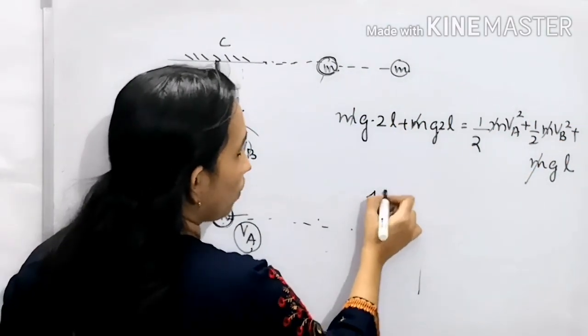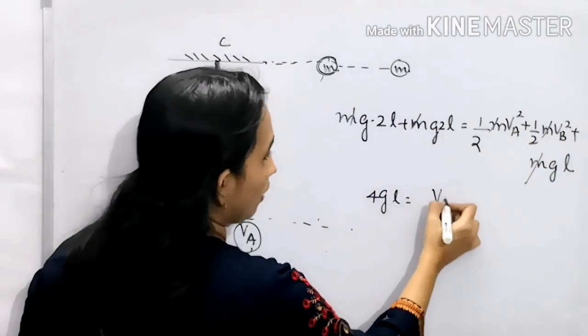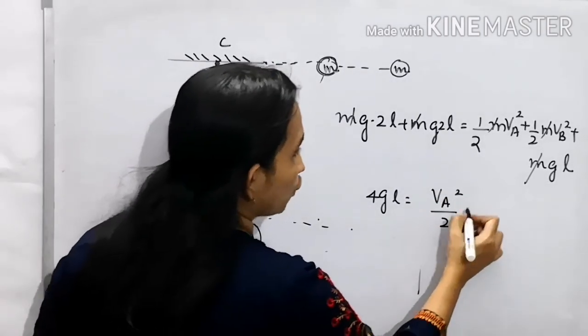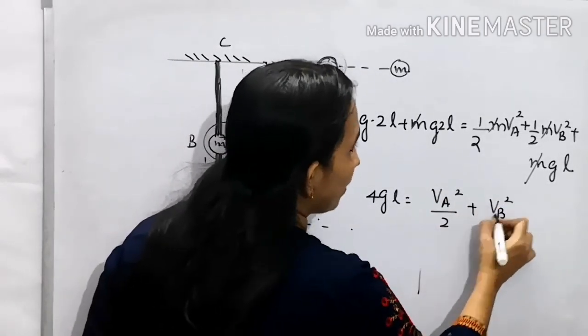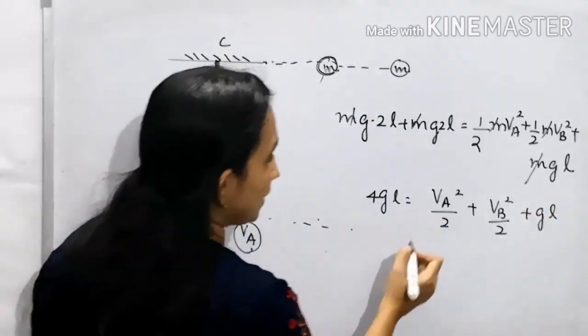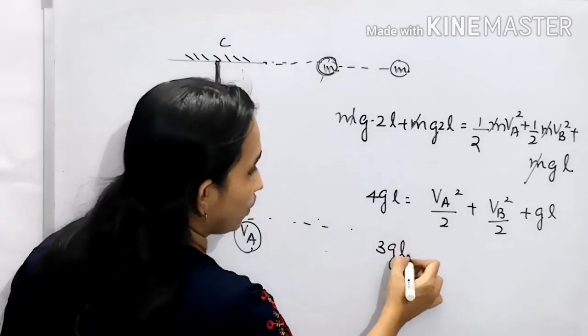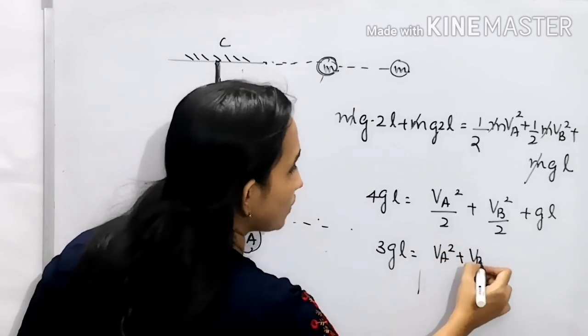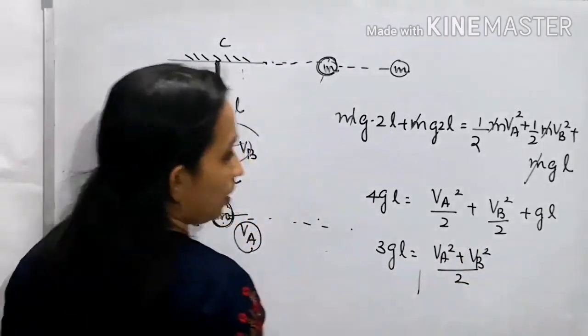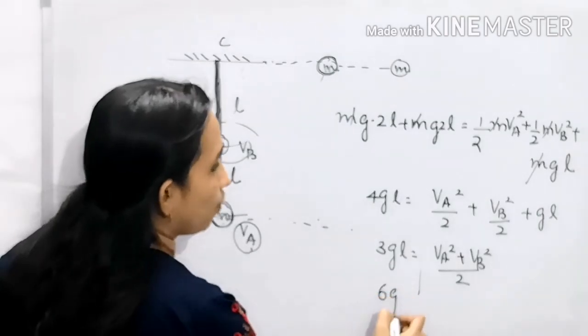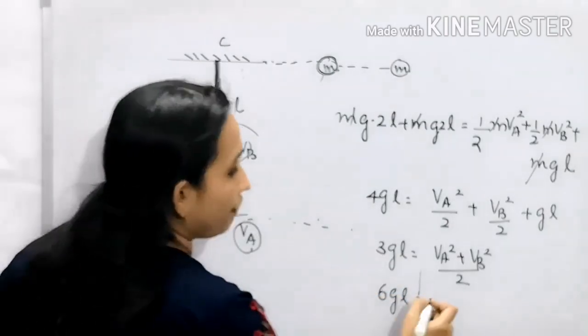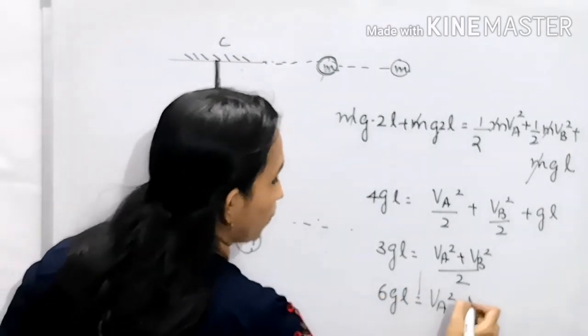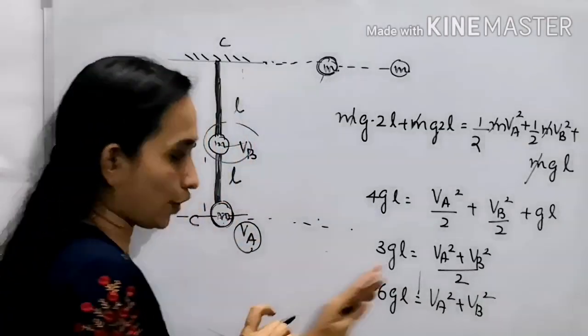This equals half M into VA square plus half M into VB square plus Mg into L. Cutting all mass terms, 4GL equals VA square divided by 2 plus VB square divided by 2 plus GL. Taking GL to this side, 3GL equals VA square plus VB square divided by 2. So 6GL equals VA square plus VB square.